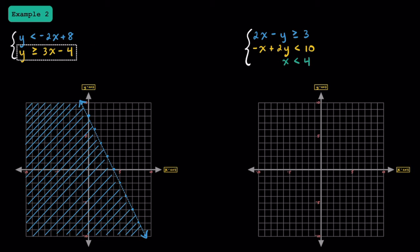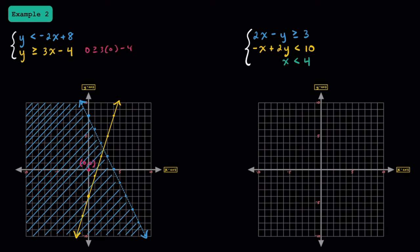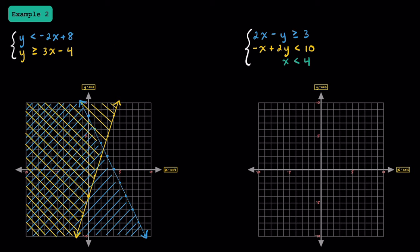Now let's take a look at our second inequality. The y-intercept is negative 4, and the slope is positive 3, so we move up 3 and to the right one. Since we have a greater than or equal to symbol, we're going to use a solid line. Testing (0, 0): we have 0 is greater than or equal to 3 times 0 minus 4, which gives us 0 is greater than or equal to negative 4. Since this is true, we're going to shade the left side of this yellow line. Now that we've graphed both linear inequalities, the section that represents all of our solutions is the one that got shaded twice. Any ordered pair in this area that got shaded twice could represent a solution for the system of linear inequalities.